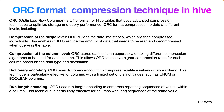For compression at the stripe level: ORC divides data into stripes, which are then compressed individually. This enables ORC to reduce the amount of data that needs to be read and decompressed when querying. ORC divides the total data into stripes and compresses them separately, so whatever data you need to read, it only decompresses that portion — not the full dataset.